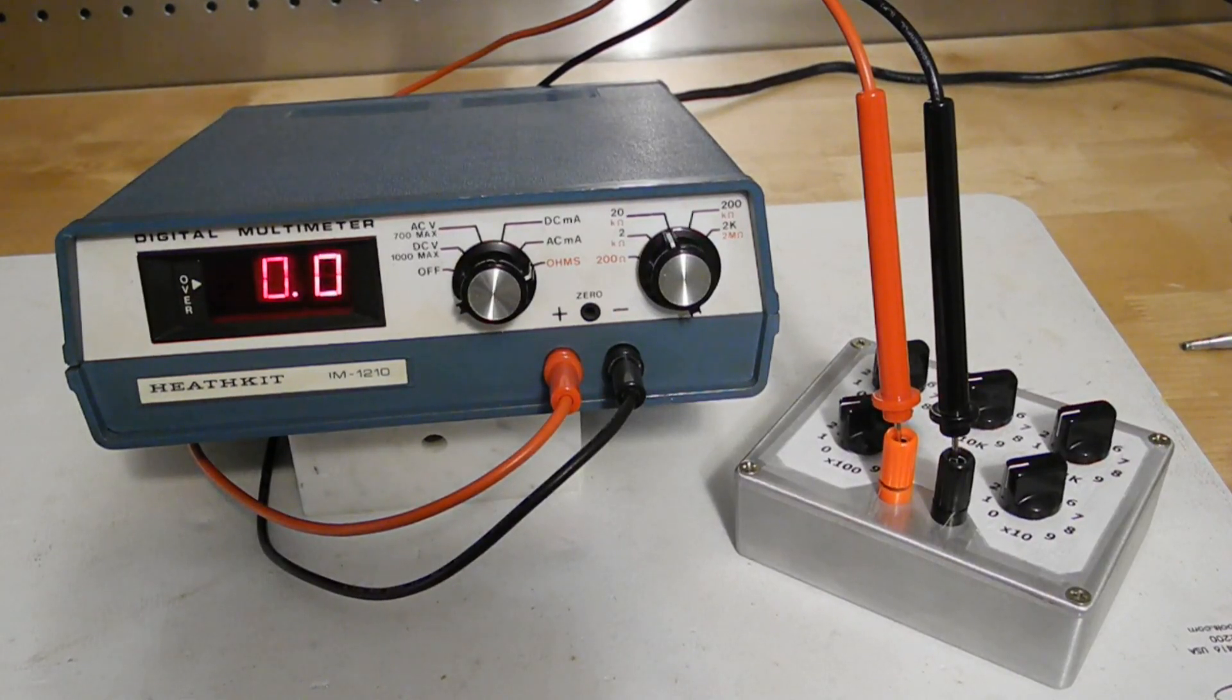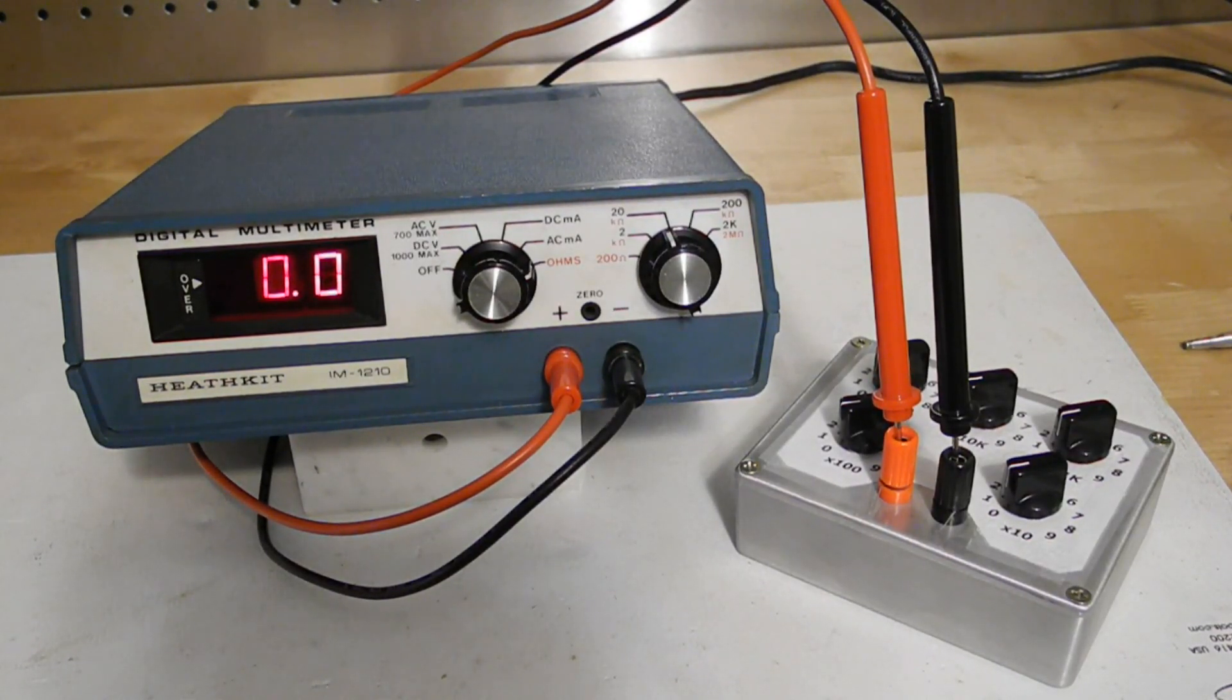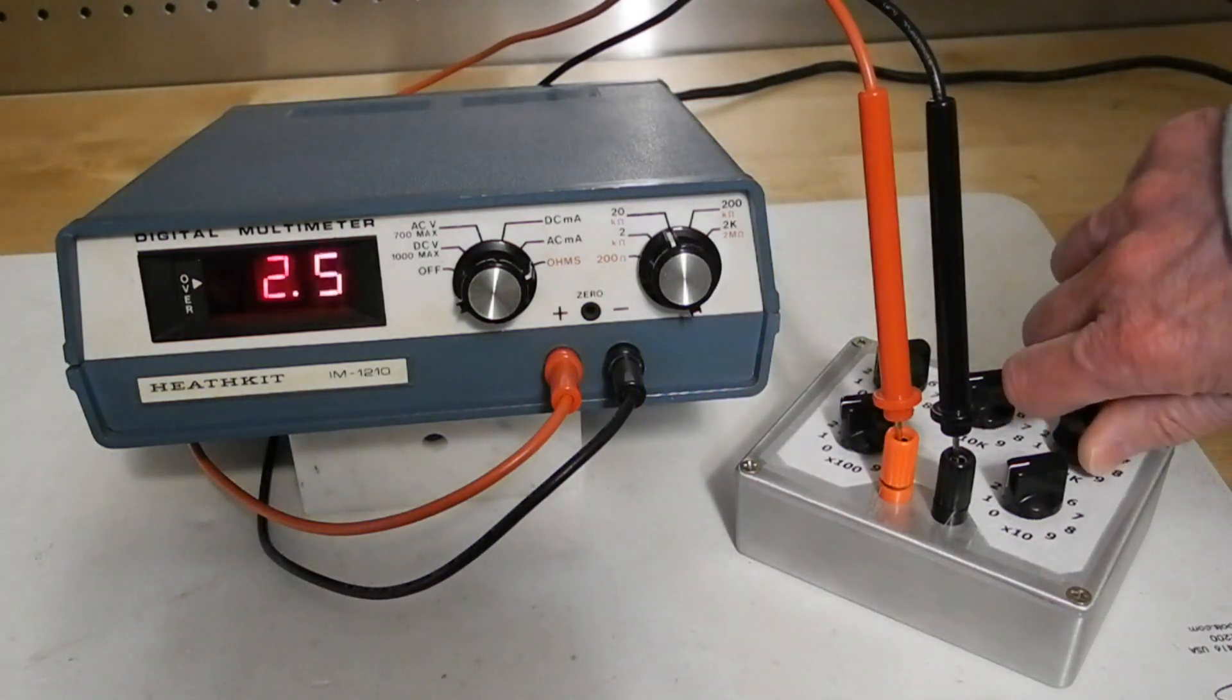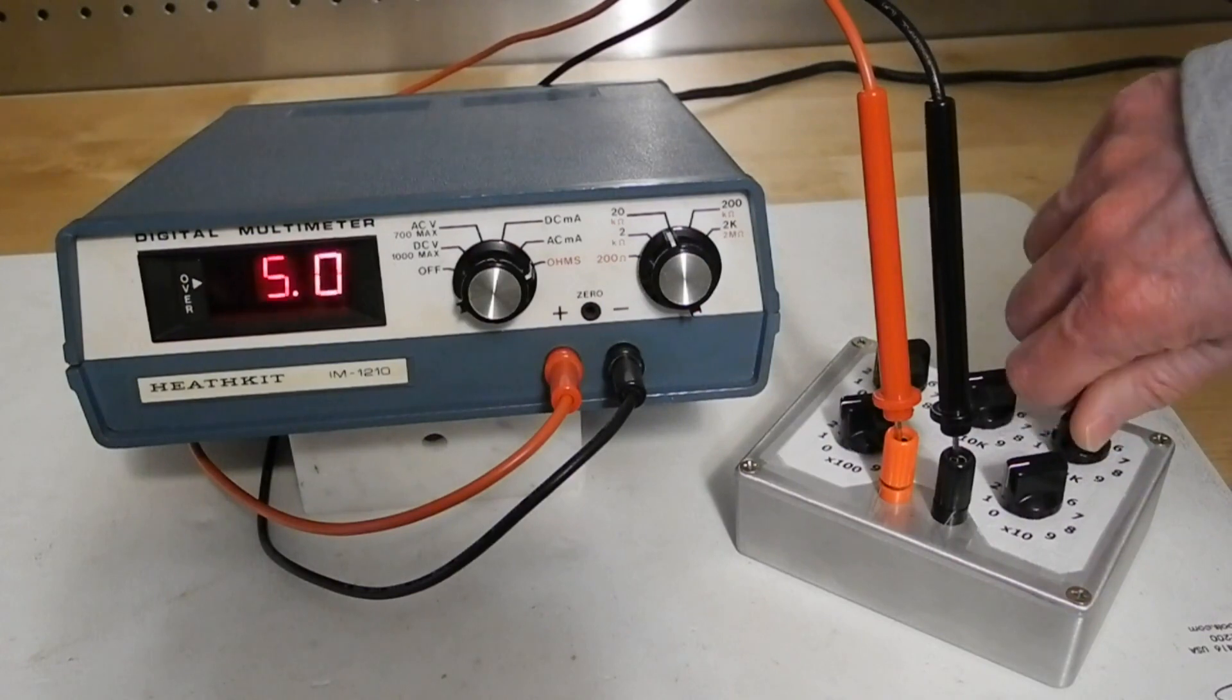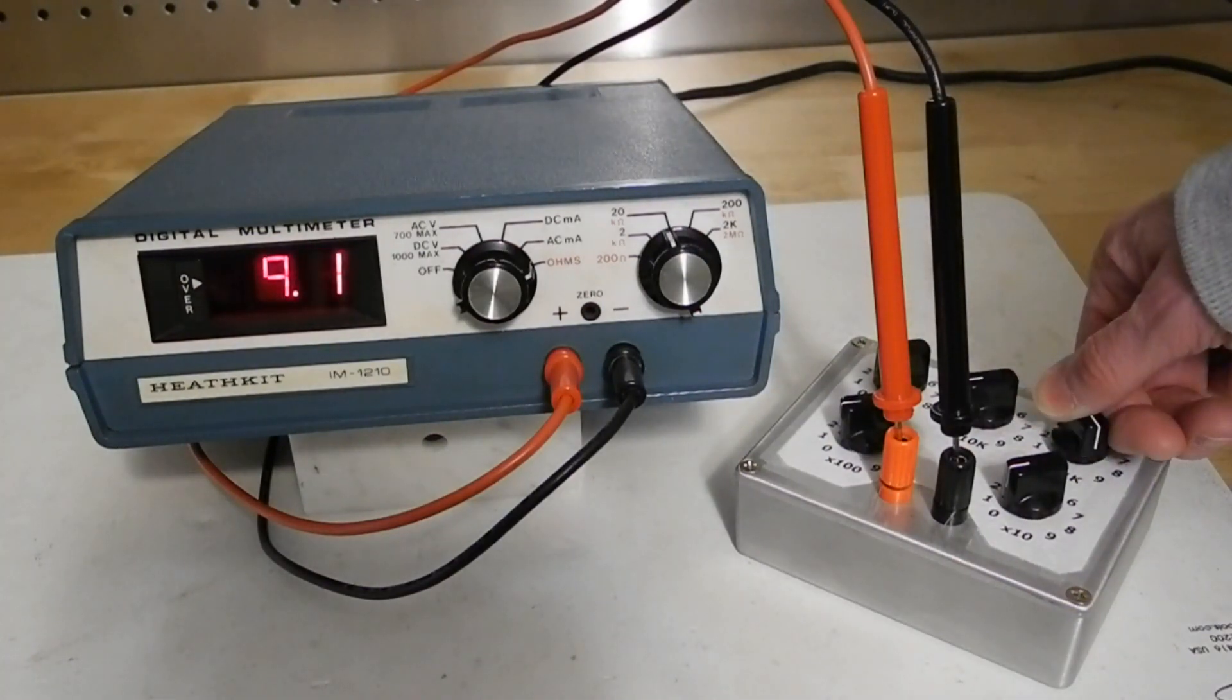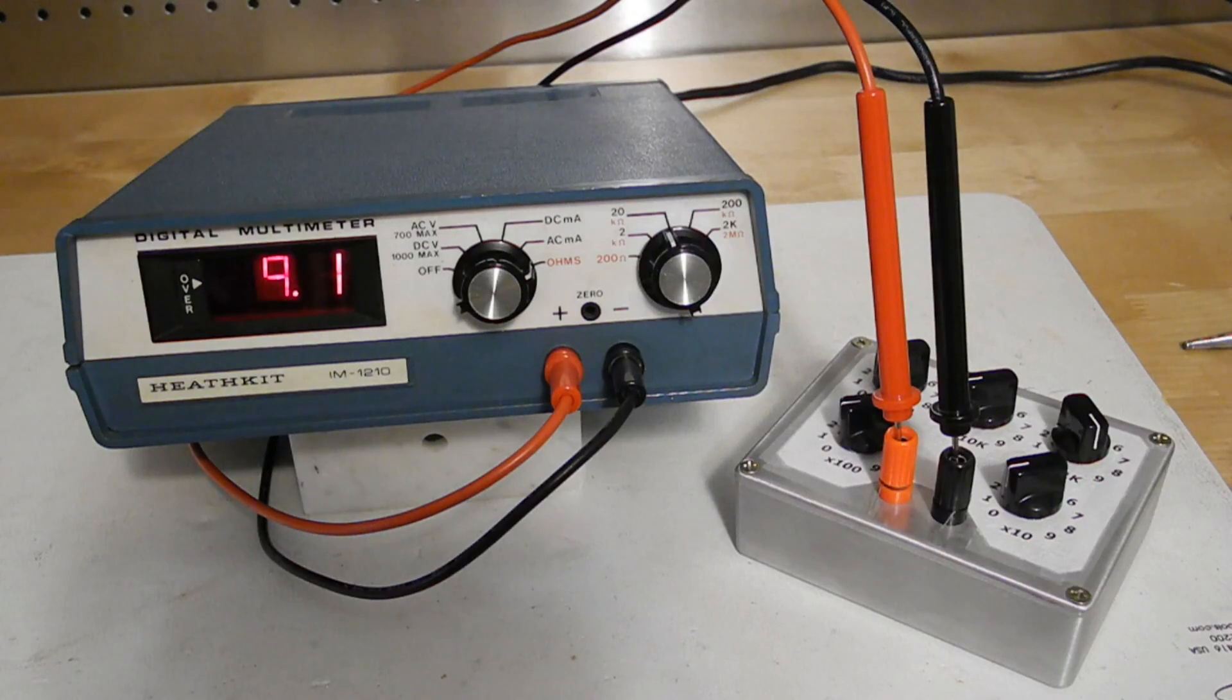For resistance measurements, you put the resistor under test across the test leads. Here I've connected it to a resistance substitution box. The ohms function has an extra range for 0 to 200 ohms. The higher ranges read in kilo ohms, except for the top one, which is mega ohms. For resistance measurements, the over lamp indicates an overrange or an open circuit. The manual warns that the current used on the 200 ohm range, 10 milliamps at 9 volts, can potentially damage semiconductors such as transistors, so the 2K or higher range should be used for this.